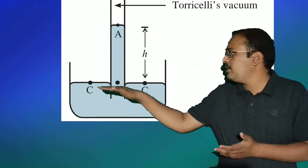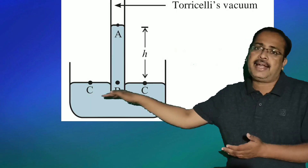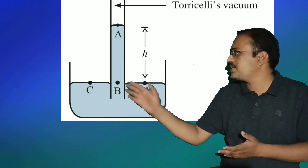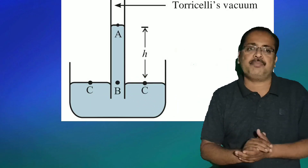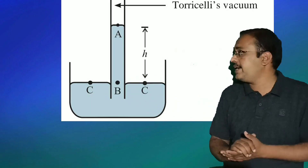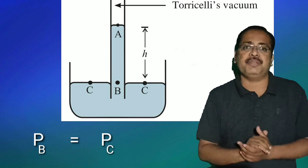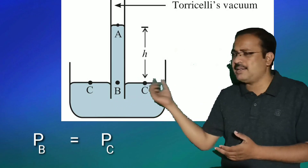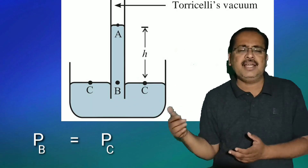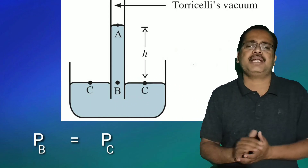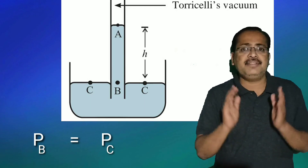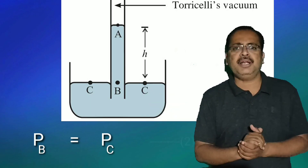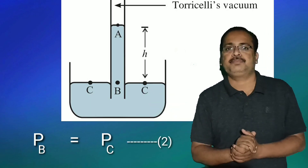Since points B and C are at the same horizontal level, the pressure at both points is also the same. Therefore we can write PB = PC. This is equation number 2.